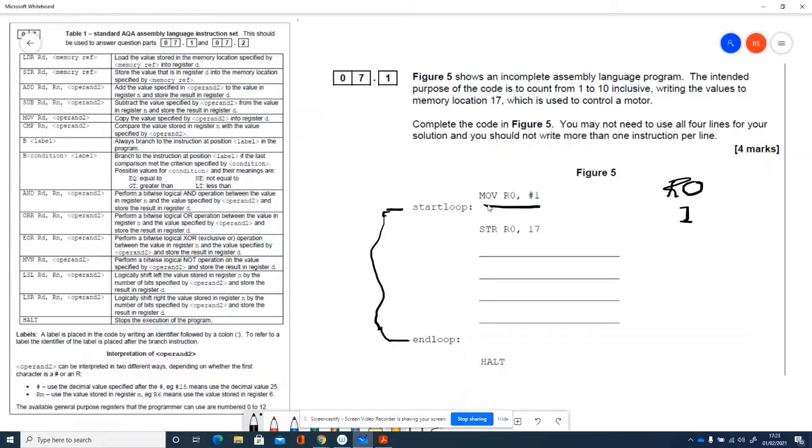So the next command is str r0 17. str is for store so str rd memory reference store the value that is in the register register d into the memory location.